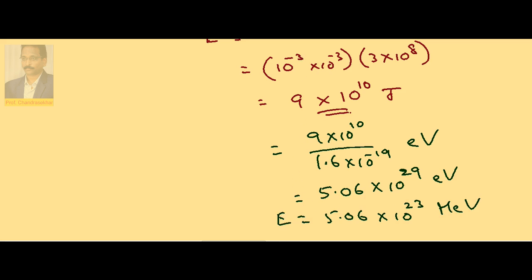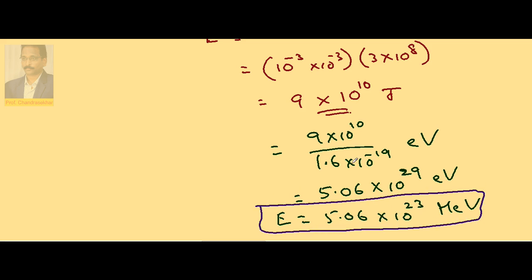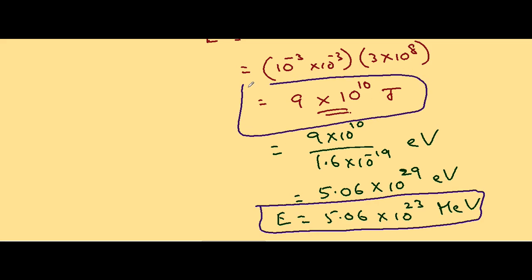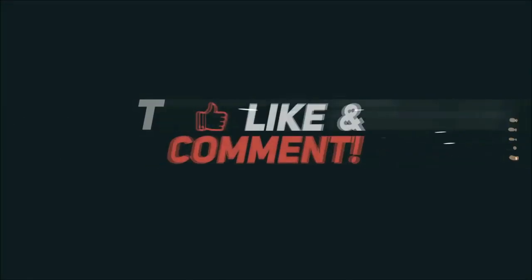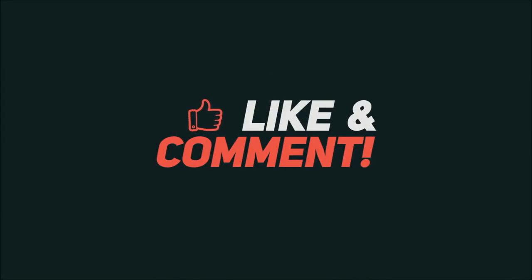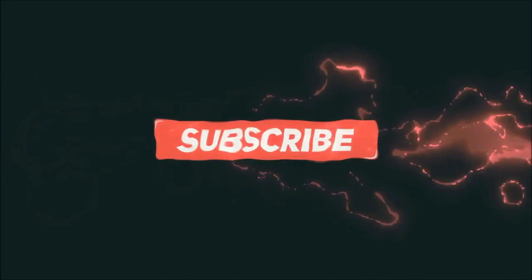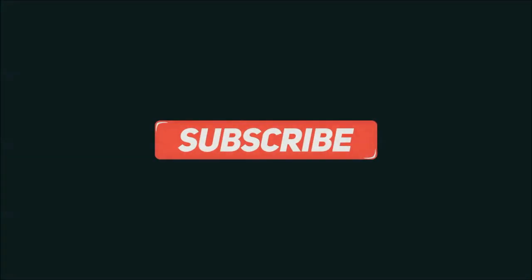Because normally energies are expressed in million electron volts. So, this is the energy released in MeV and this is the energy released in Joules.